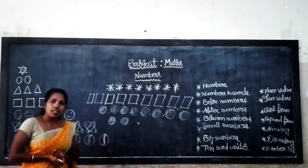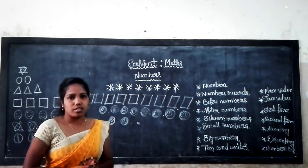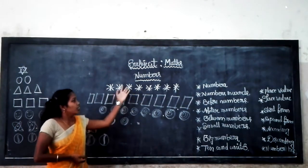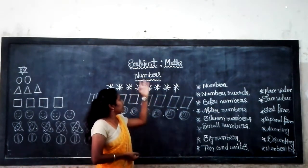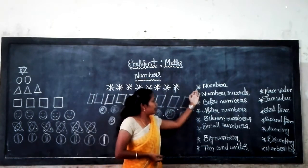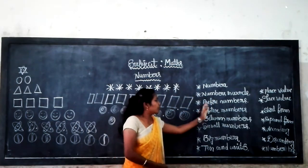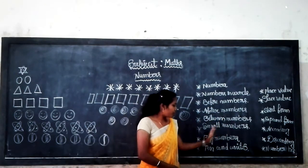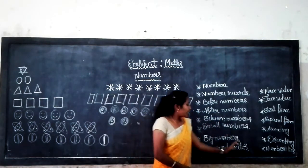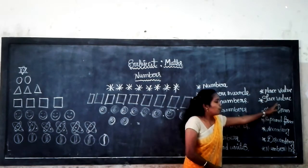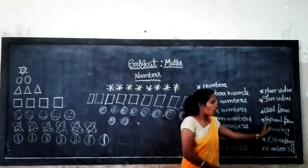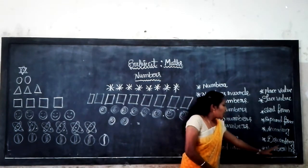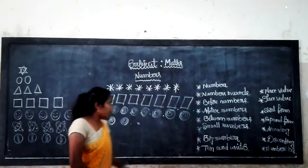Dear friends, in the previous class we learned about numbers. Today we are going to learn about numbers — numbers in words, before number, after number, between numbers, and many numbers. We will also cover tens and units, place value, short form, expanded form, and number line.